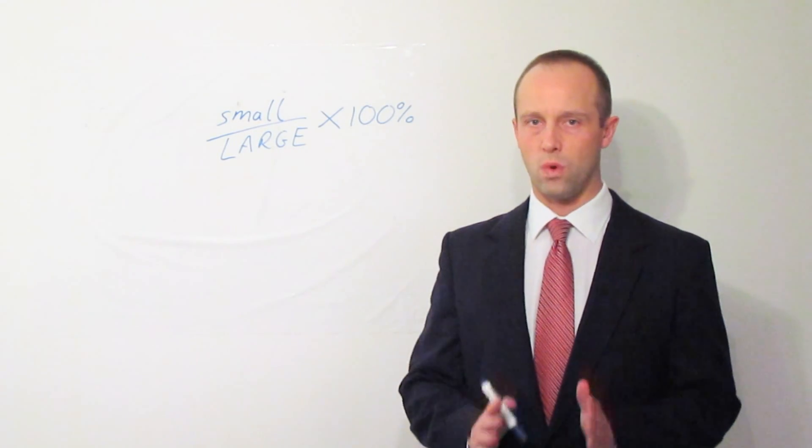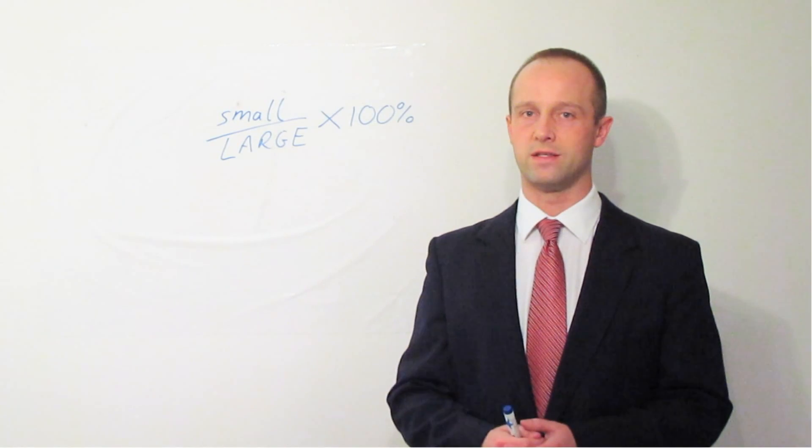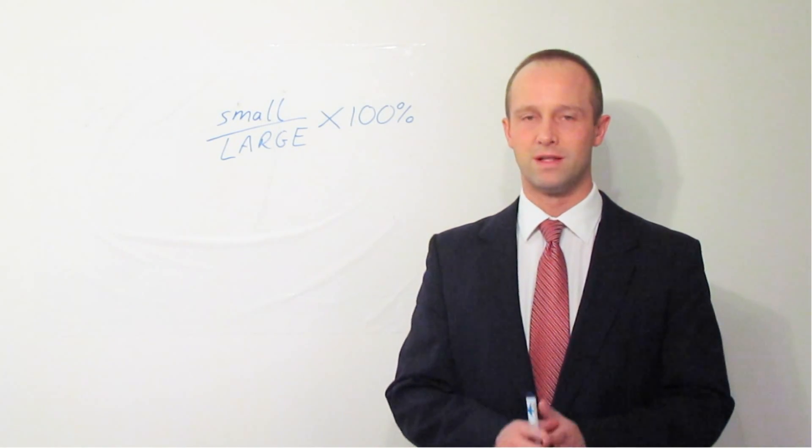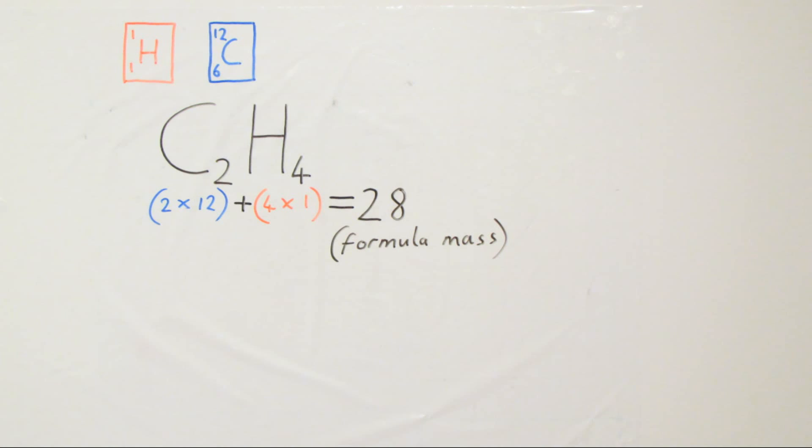To work out what the relative mass of an element within a molecule is, it's very simple. Let me show you a worked example so you can see how. In this example, we're going to look at the compound ethene, which has the formula C2H4, and we're going to look at what percentage of its total mass is made up by the carbon atoms.